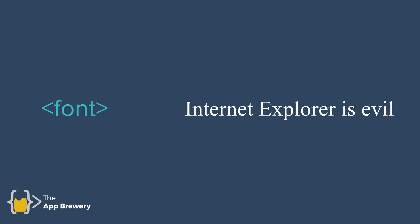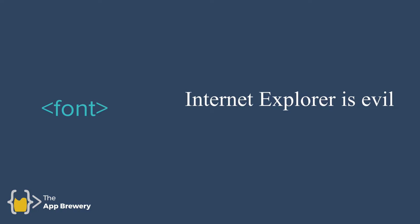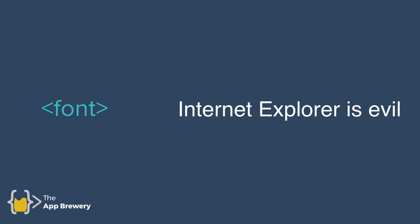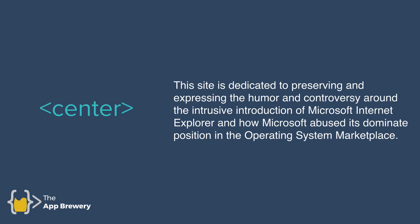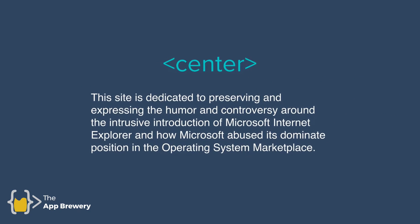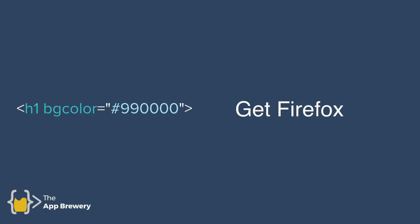In order to style up a website using pure HTML, which is all they really had access to, they had to use HTML tags. For example, the font tag, which you can use to change the font of the text being displayed. You can also use things like the center tag, which simply centers any element on screen. In addition to that, people also used attributes. For example, you can set the H1's background color using the background color attribute to a particular color hex code, and that would change the H1 to a different color.